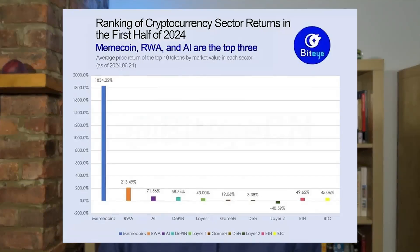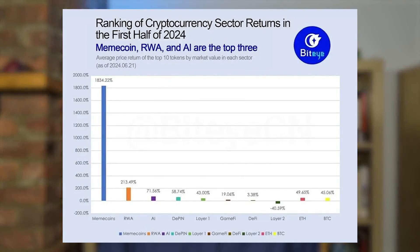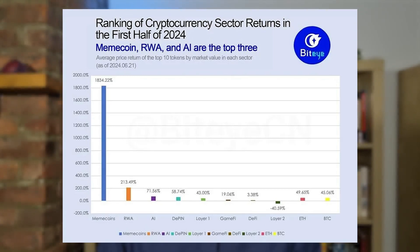DePIN's total market cap is over 21 billion dollars at the time of recording this video, according to CoinGecko. DePIN had the fourth highest returns in the first half of 2024, at about 59%, being behind meme coins, real world assets, and AI, but had larger returns than Layer 1s, GameFi, DeFi, Layer 2s, ETH, and BTC.